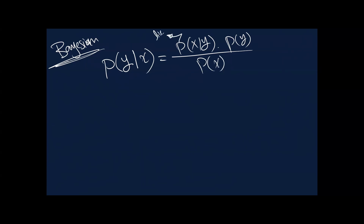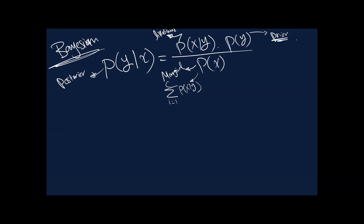This part is called the likelihood, this is the prior, and this is the marginal. The marginal probability is nothing more than summing over the different classes of the likelihood. We take this likelihood and sum over the classes we have. This is actually analogous to what we were doing with softmax, because with softmax we took one probability and divided it by the summation of different probabilities — so it's almost like taking a likelihood and dividing by the summation of all likelihoods. We'll talk about the prior in just a minute.